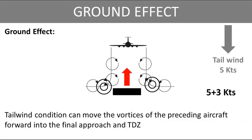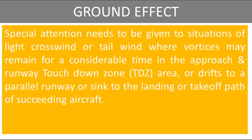A tailwind condition can move the vortices of the preceding aircraft forward into the final approach and touchdown zone. Special attention needs to be given to situations of light crosswind or tailwind, where vortices may remain for a considerable time in the approach and runway touchdown zone area, or drift to a parallel runway, or sink to the landing or take-off path of succeeding aircraft.